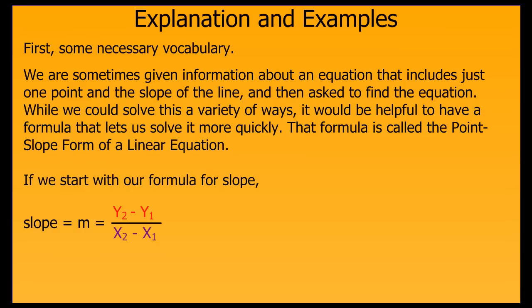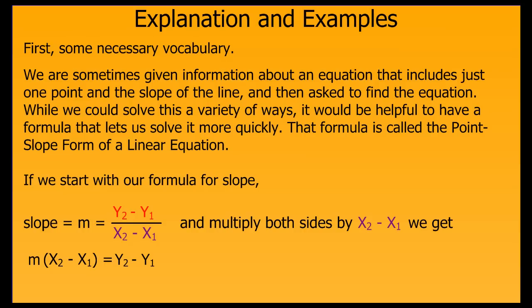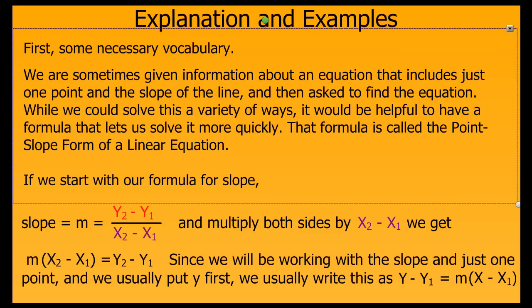We can develop that formula by starting with our formula for slope. If we multiply both sides of this formula by the quantity x2 minus x1, then we get m times the quantity x2 minus x1 equals y2 minus y1. Since we'll be working with just the slope and one point, we'll call that point x1, y1, and since we typically write y on the left side of the equation, we'll rewrite that last equation as y minus y1 equals m times the quantity x minus x1. This is called the point-slope form of a linear equation.